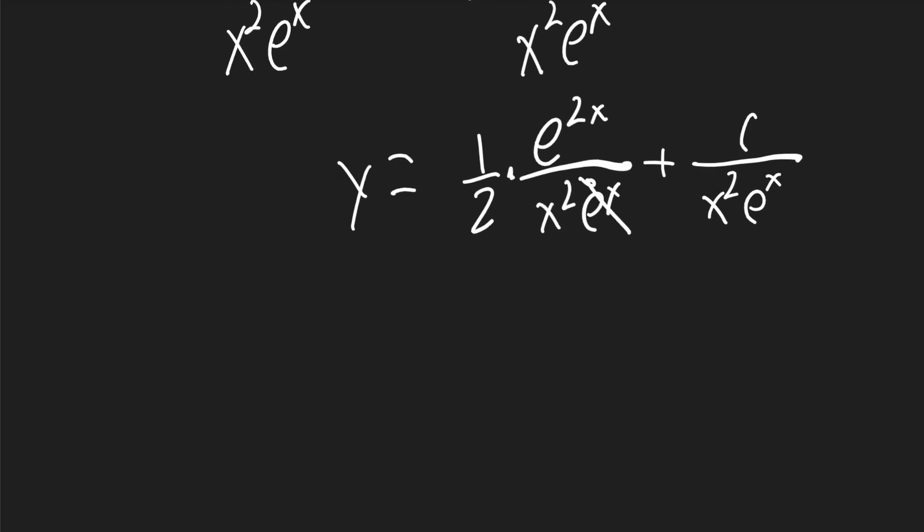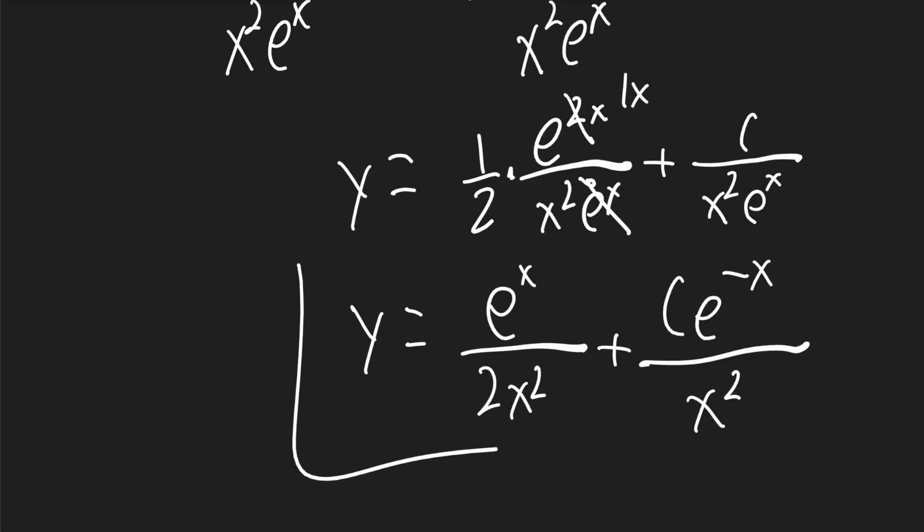One of those e's will cancel with one of them up there, and we'll just get 1x on the top. So y will be equal to e to the x over 2x squared plus c e to the negative x over x squared. And that is our final answer. If this video helped you, consider subscribing. Thank you.